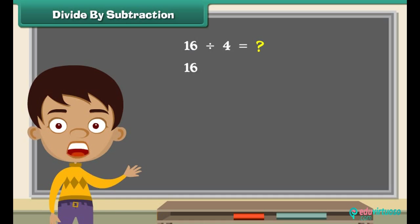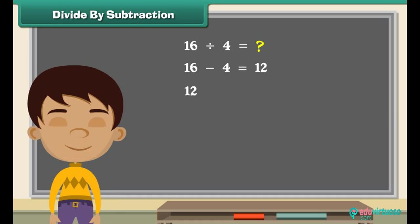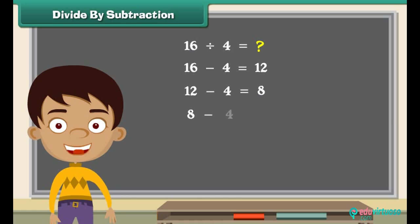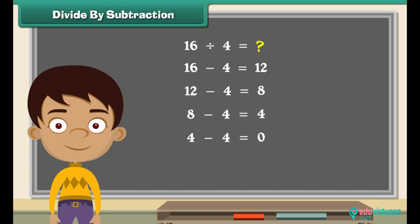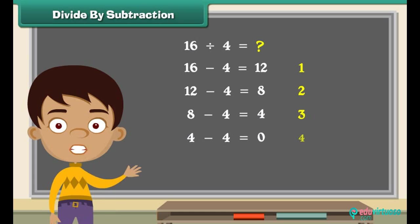Subtract four from sixteen — we get twelve. Now subtract four from twelve — we get eight. Subtracting four from eight, we get four. Similarly, subtract four from four — we get zero. Remember to keep subtracting until we get zero. Let us now see how many fours have been subtracted: one, two, three, four.